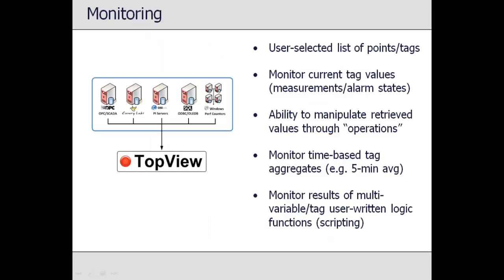The first task of the Top View engine is to monitor data from the underlying system. This can include numeric, string, boolean, and date values. Using the Top View Configurator, the user can browse the underlying system to select points of interest. The selected data points can be both measurement values and, if they exist, alarm states based on existing alarm logic in the underlying system. Top View will retrieve the current values of the selected points and can optionally provide additional processing of the retrieved data before monitoring occurs.